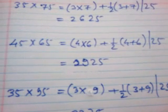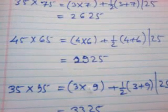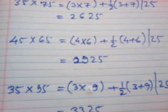35 into 95, 3 into 9, 27, plus half of 3 plus 9 is 6. 27 plus 6 is 33, and at the back, 25.